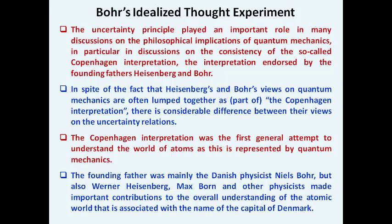Heisenberg was an assistant of Bohr, and Bohr himself had started working with wave nature concepts as early as 1911. In spite of the fact that Heisenberg's and Bohr's views on quantum mechanics are often combined as the Copenhagen interpretation, there are considerable differences between them. The Copenhagen interpretation was the first general attempt to understand the world of atoms as represented by quantum mechanics, founded mainly by Danish physicist Niels Bohr, Werner Heisenberg, Max Born, and others associated with Denmark.